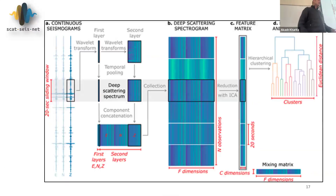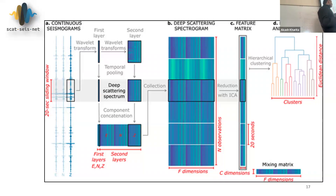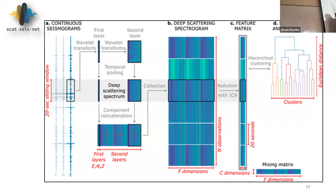I also extracted a set called scattering network features, which are becoming very popular, specifically for unsupervised clustering. In essence, we take raw waveforms and convolve them with wavelets in different frequency bands to get the wavelet transform, then apply another wavelet convolution on the obtained wavelet transform to get a second-order transform, which we stack — these are considered as features. They are popular because of their robustness to noise and shifting.